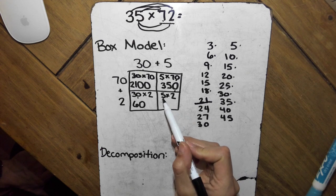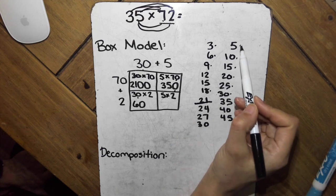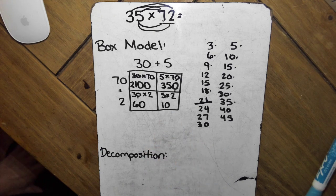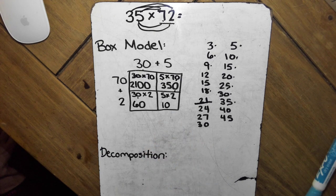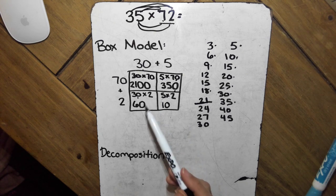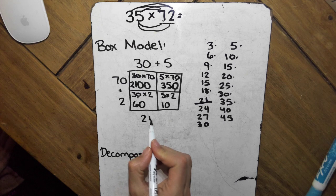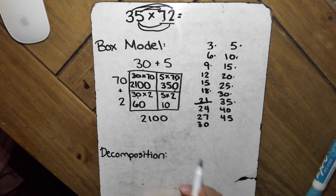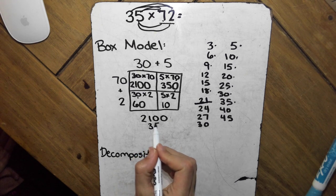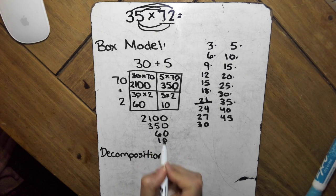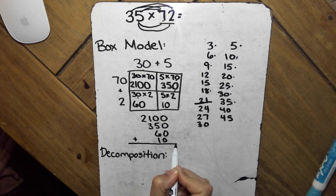And the last one is 5 times 2. 1, 2, 10. Both of these are ones, so our answer is 10. So now that I have all the partial products, now I'm going to add them up, making sure that I line up my digits. So 2,100, 350, 60, 10. Add them all up.